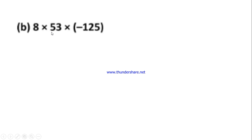Without using properties it can be simplified. 8 × 53 will have an answer, then with that answer we will multiply by -125. That is direct multiplication. But here the question asks to find the product by using suitable properties.